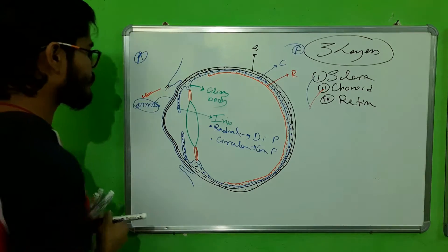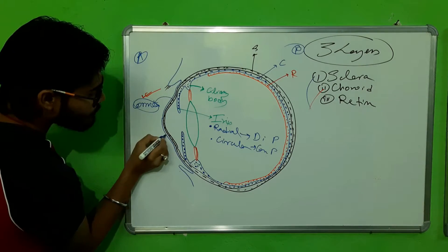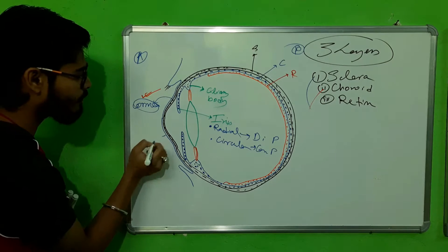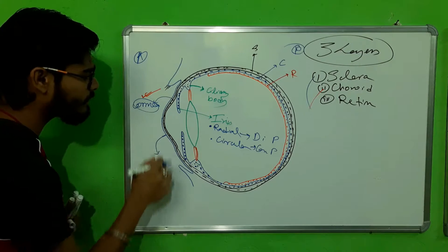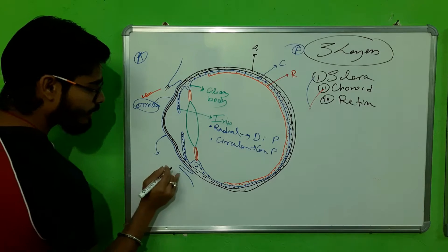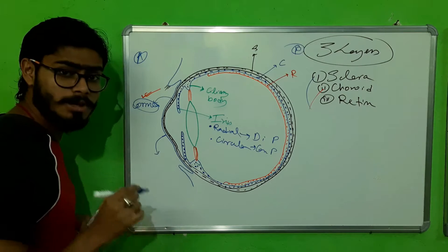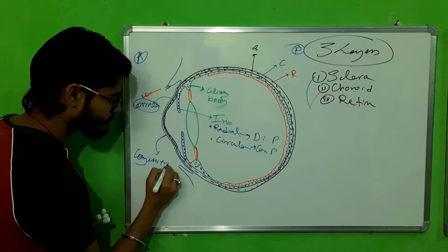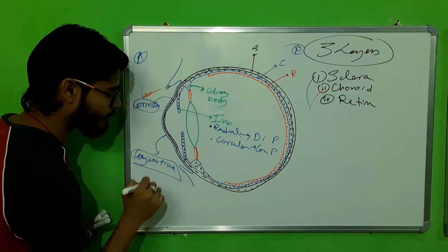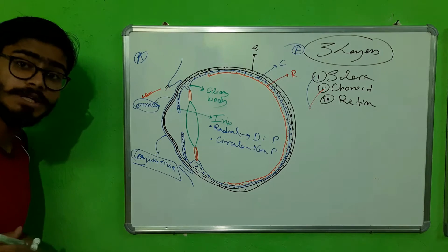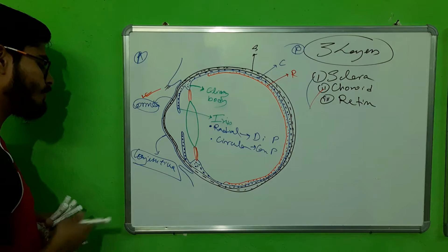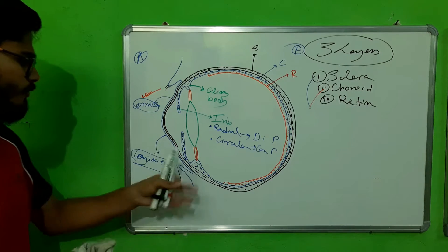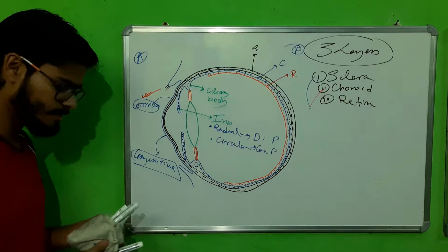Just outside the sclera of the front part we have another fine transparent epithelial layer — the conjunctiva. You may have heard of conjunctivitis, which is the infection of the conjunctiva; it can be bacterial or viral, but that is outside the scope of our syllabus presently.